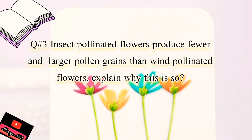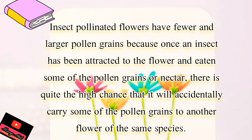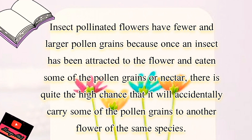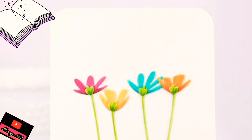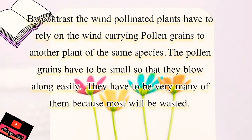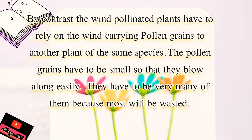Now get ready for your written task. Write Question 3: Insect-pollinated flowers produce fewer and larger pollen grains than wind-pollinated flowers — explain why. The answer is: insect-pollinated flowers have fewer and larger pollen grains because once an insect is attracted to the flower, there is a high chance it will accidentally carry pollen grains to another flower of the same species. By contrast, wind-pollinated plants must produce pollen that is very small to blow easily, and in very large amounts since most pollen will be wasted.